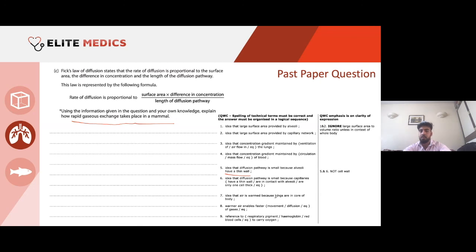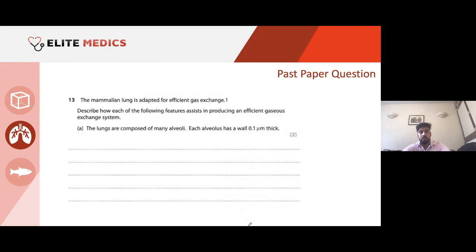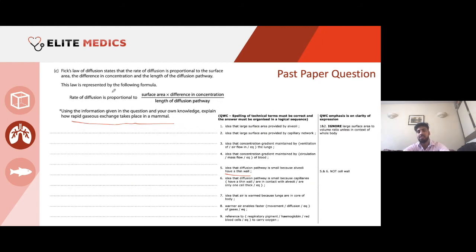Air is warmed because the lungs are in the core of the body at 37°C. Warmer air enables faster movement of gas particles because they're more energised. And there's a reference to haemoglobin — it binds to oxygen, reducing the concentration of oxygen in the blood plasma, so more O2 can diffuse from the alveolus into the blood. This is a very important six-marker that ties everything together — a very good summary question.